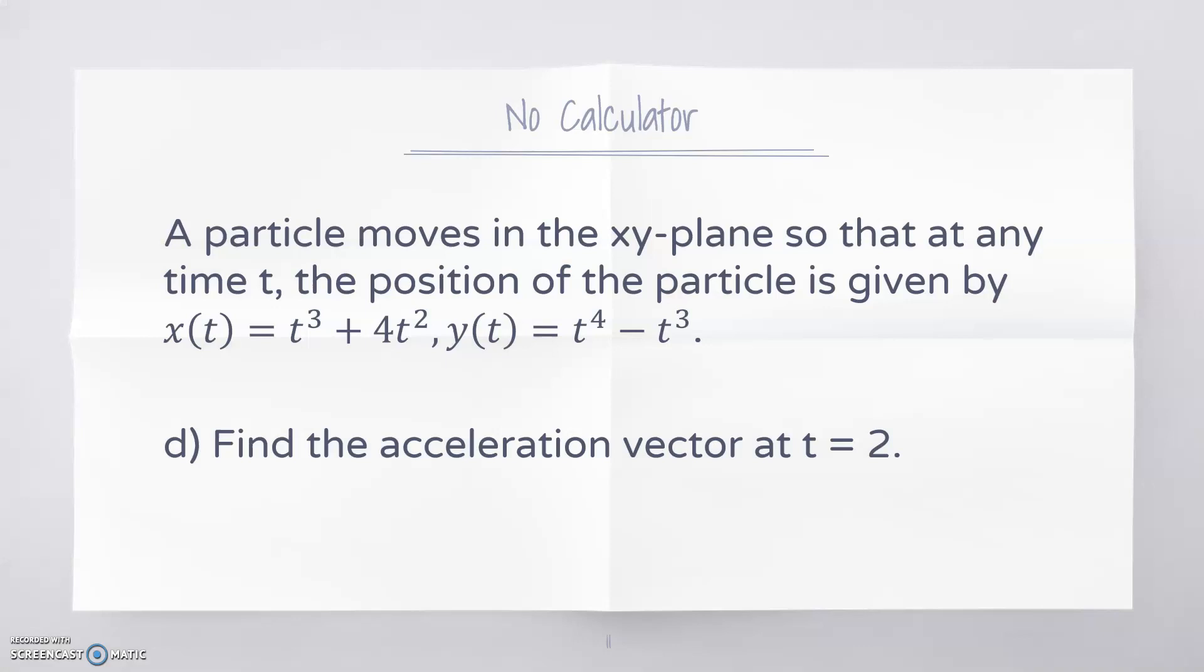Find the acceleration vector at t = 2. We need a second derivative for that. Then we're going to plug 2 into that, so x''(2) would be 12 + 8 which is 20, and y''(2) would be 48 - 12 which is 36. So our acceleration vector at t = 2 would be ⟨20, 36⟩.